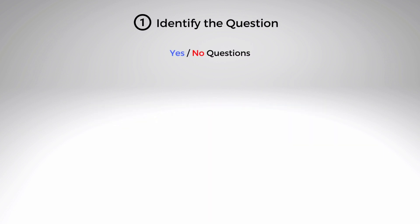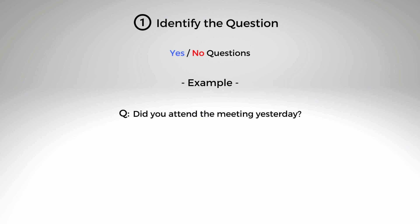Tip number one: identify the question type. Yes or no questions — a yes or no question can be answered with a simple yes or no. For example, 'Did you attend the meeting yesterday?' Yes, I did. Or, no, I didn't.